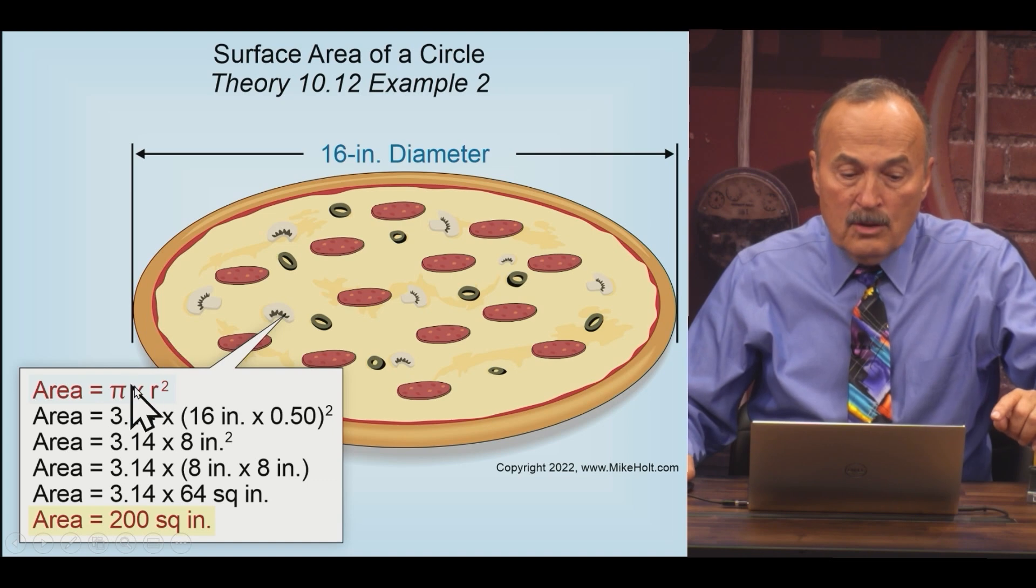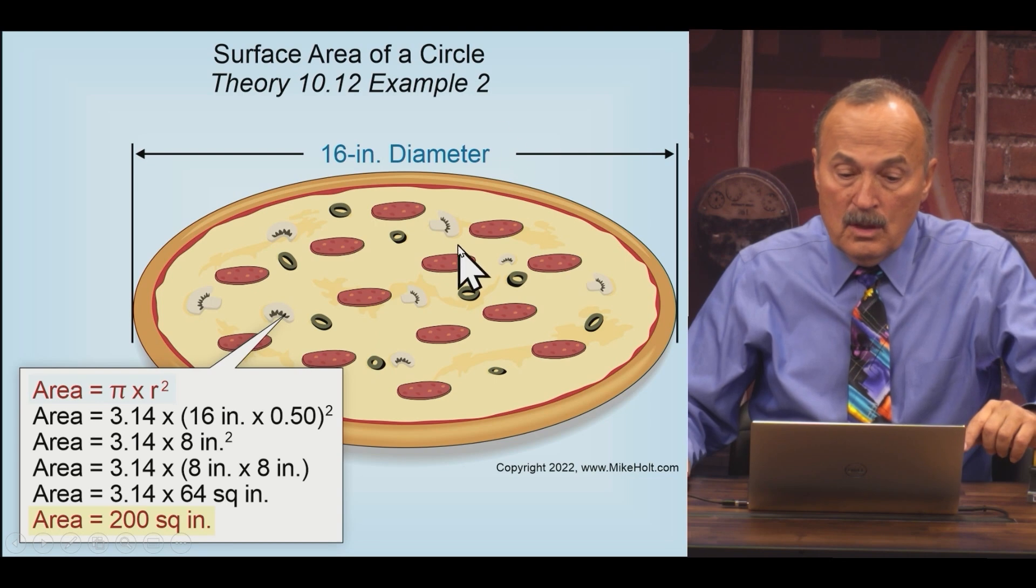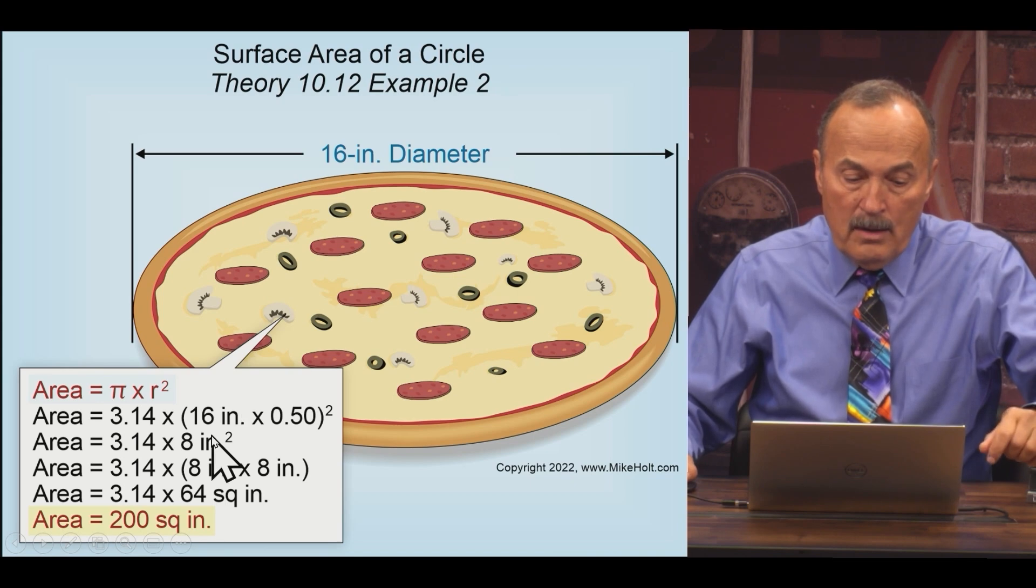It's still pi r squared. Pi is 3.14 times the radius, which is going to be eight inches - 50% of the diameter - squared. So eight squared, eight times eight is 64. 3.14 times that comes out to be 200 square inches.